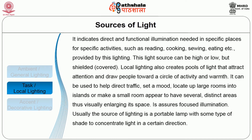The second type is task or local lighting, indicating direct and functional illumination needed for specific activities such as reading, cooking, sewing and eating. This light source can be high or low but should be shielded. Local lighting creates pools of light that attract attention and draw people toward a circle of activity and warmth. It can help direct traffic, set a mood, or divide large rooms into islands, or make a small room appear to have several distinct areas, thus visually enlarging its space. It assures focused illumination, and the source is usually a portable lamp with some type of shade to concentrate light in a certain direction.